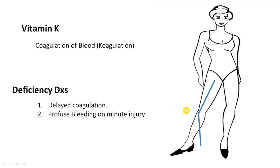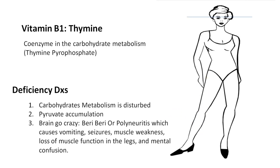Now let's move to the B vitamins: B1, B2, B3, B5, B6, B7, B9, and B12. We'll cover them by starting from the top and moving down the body. First is Vitamin B1 — Thiamine. It helps in carbohydrate metabolism. The brain uses mainly glucose, which is a carbohydrate, so B1 is essential there. It is mainly used as thiamine pyrophosphate.